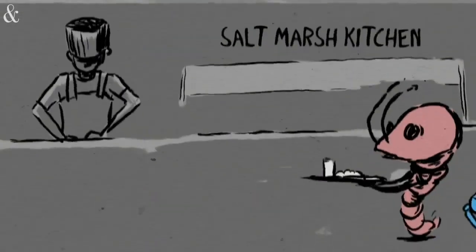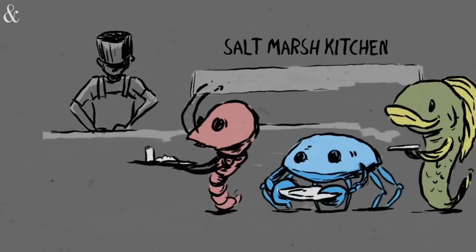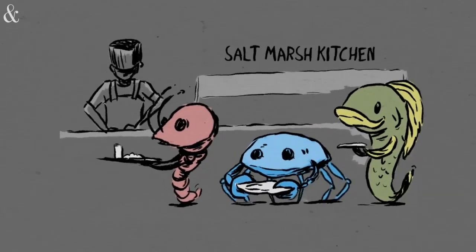Salt marshes provide food, shelter, and a nursery habitat for more than 75 percent of coastal fishery species, including shrimp, blue crab, fish, oysters, and clams.